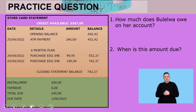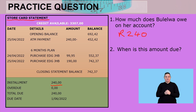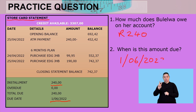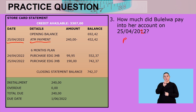We've got a store card statement. How much does Bulelwa owe on her account? Looking at the bottom, it's 240 rand. When is this amount due? The due date is the 1st of June 2022. How much did Bulelwa pay into the account on the 25th of the 4th, 2022? There's an ATM payment of 240 rand.